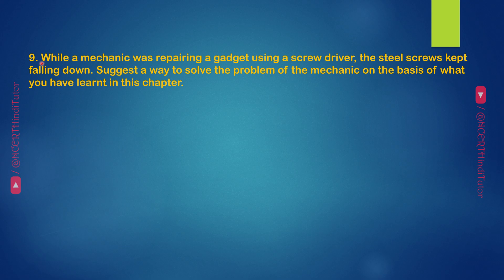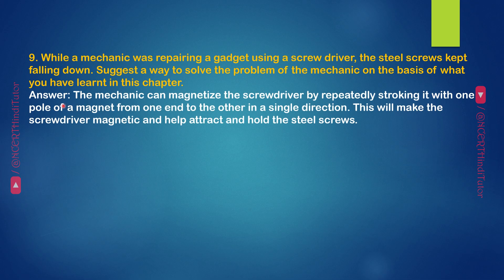Question 9: While a mechanic was repairing a gadget using a screwdriver, the steel screws kept falling down. Suggest a way to solve the problem of the mechanic on the basis of what you have learned in this chapter. Answer: The mechanic can magnetize the screwdriver by repeatedly stroking it with one pole of a magnet from one end to the other in a single direction. This will make the screwdriver magnetic and help attract and hold the steel screws.